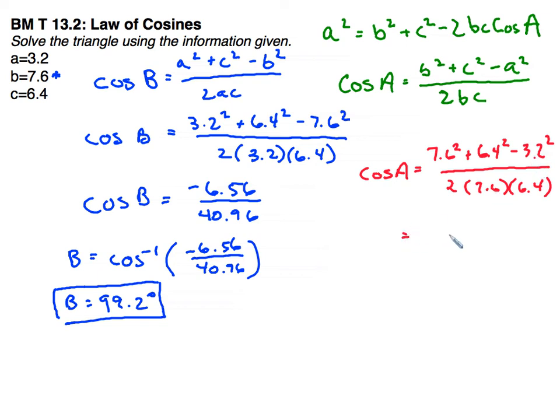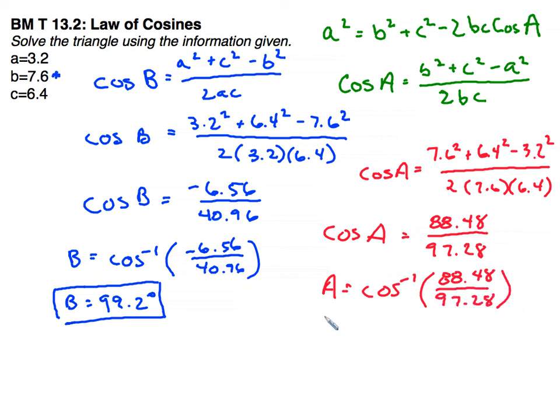When I work that out, I get on the top 88.48 and on the bottom 97.28. And so I will inverse to find the angle. Inverse 88.48 over 97.28. And for angle a, I get 24.6 degrees.